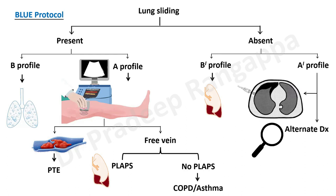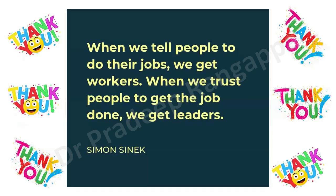Even if you don't remember the full protocol, just remember: first look for A-profile, then look for lung sliding, then look for B-lines, then go to the PLAPS point to look for consolidation. That pretty much summarizes the whole lung ultrasound approach. All other aspects of bedside ultrasound utility, including procedure videos, are covered in individual videos on my YouTube channel and website.